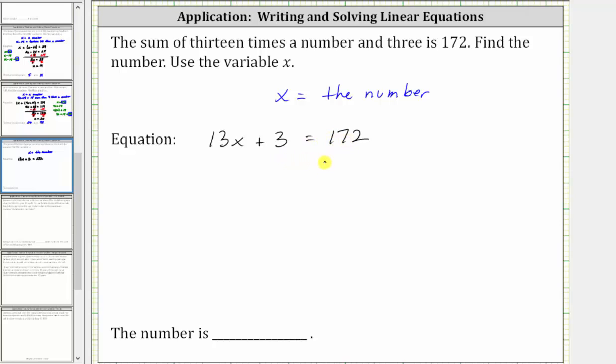Now if we solve the equation for x, we can determine the number. In order to solve for x, we need to isolate x on one side of the equation. To solve the given equation, the first step is to isolate the variable term of 13x by undoing the plus three, which means the first step is to subtract three on both sides of the equation.